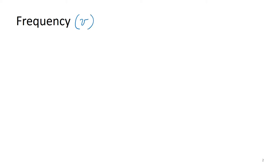There's another important property of waves: frequency. Frequency is abbreviated by the Greek letter nu. It looks like a fancy V — if I write a plain V, that's a V, but if it's all fancy, like it's going out on Friday night, that's nu.